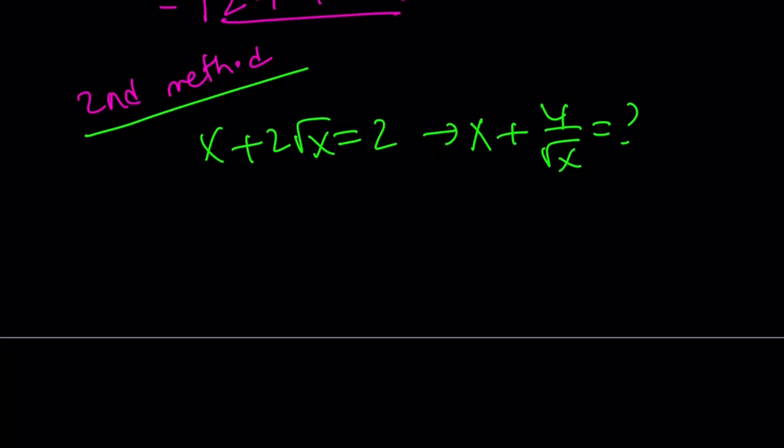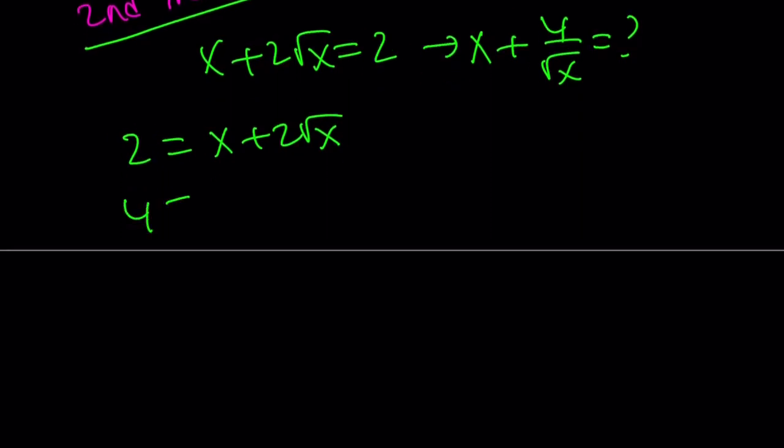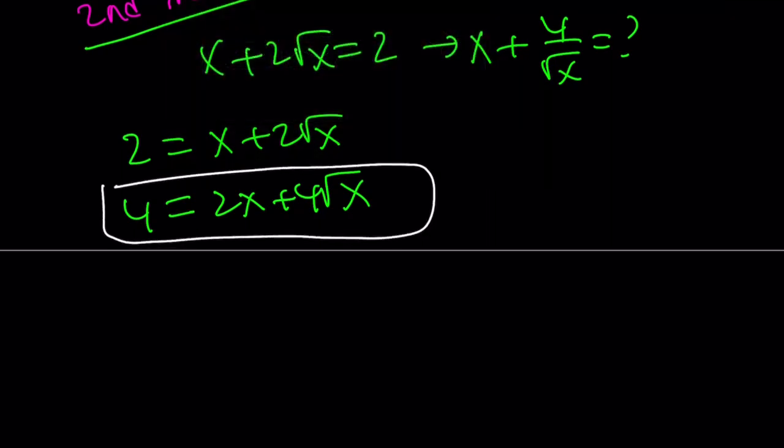So here's how the second method works. We're going to set 2 equal to x plus 2 root x because that's what it is. I just switch sides. And then I'm just going to double both sides, multiply by 2. That gives us 4 equals 2x plus 4 root x. Now, why did I do that? There's a good reason.